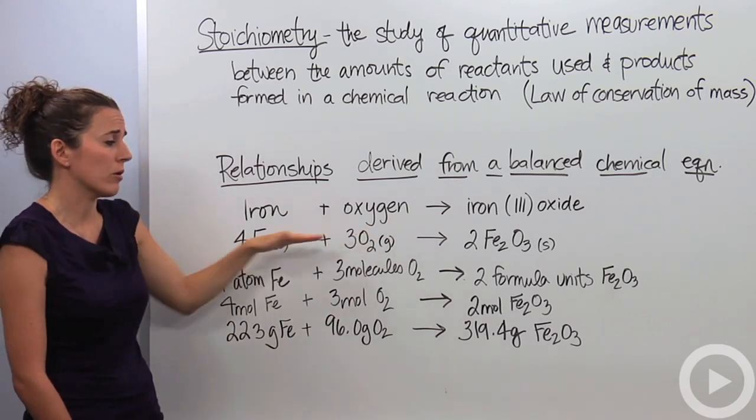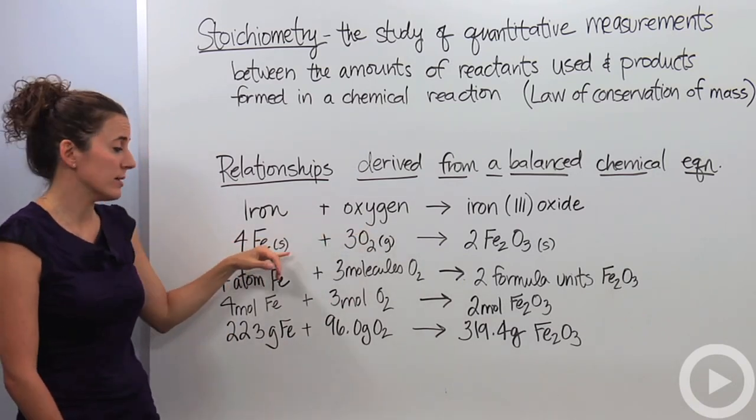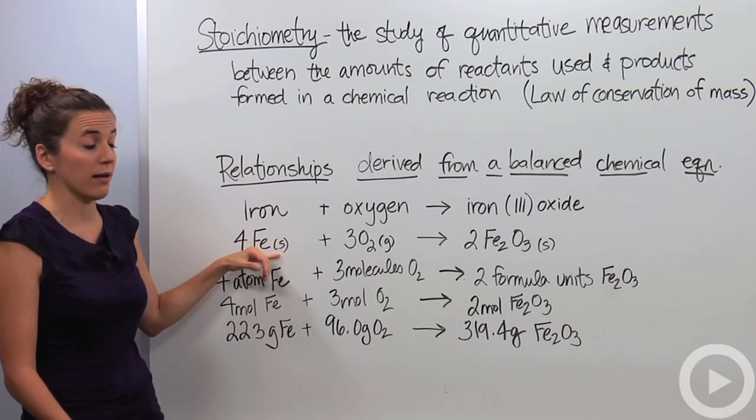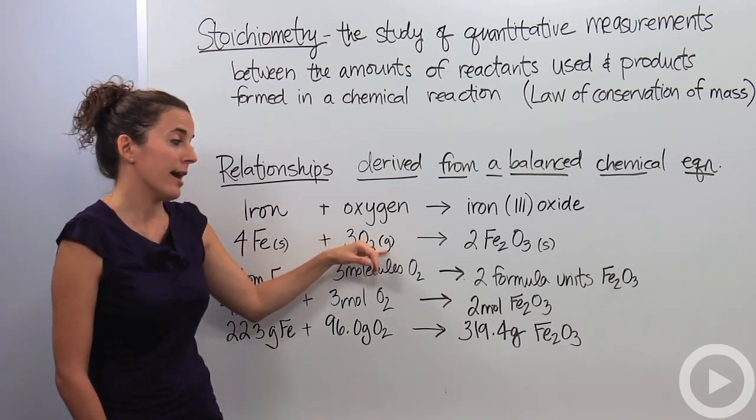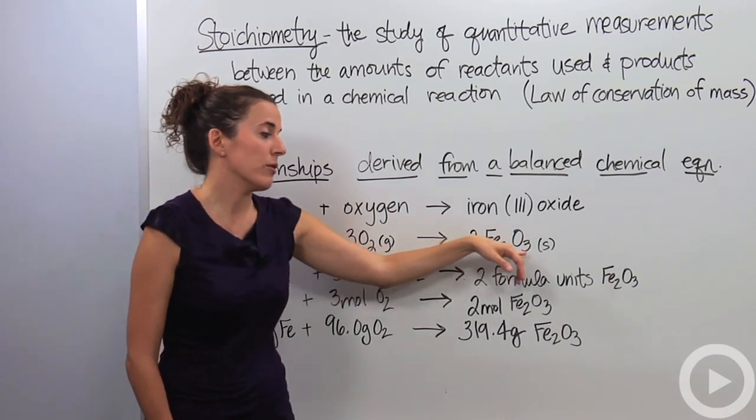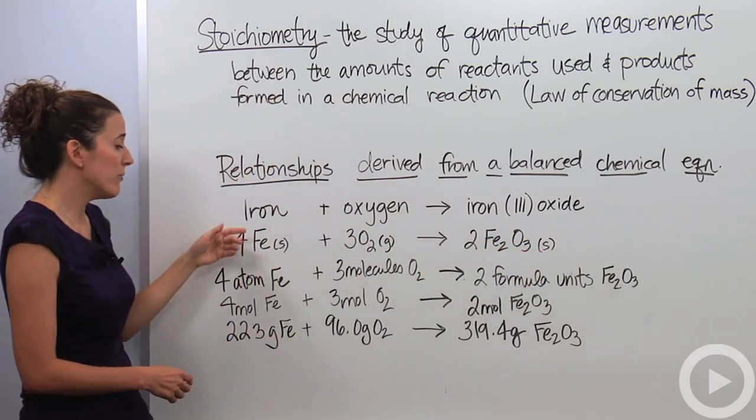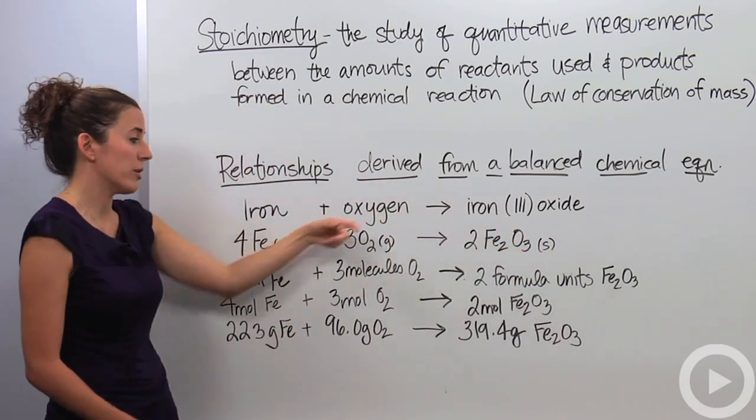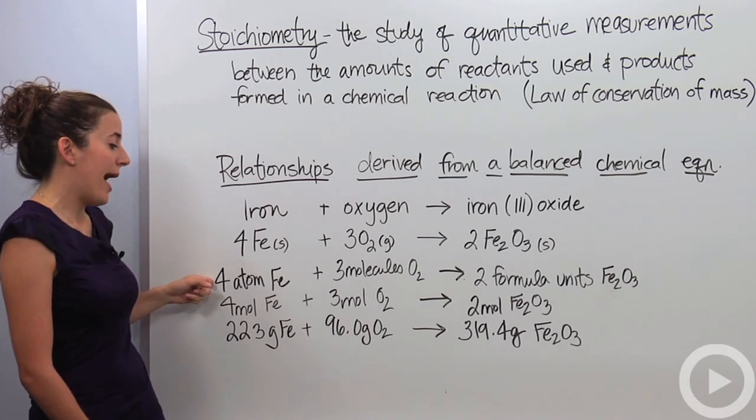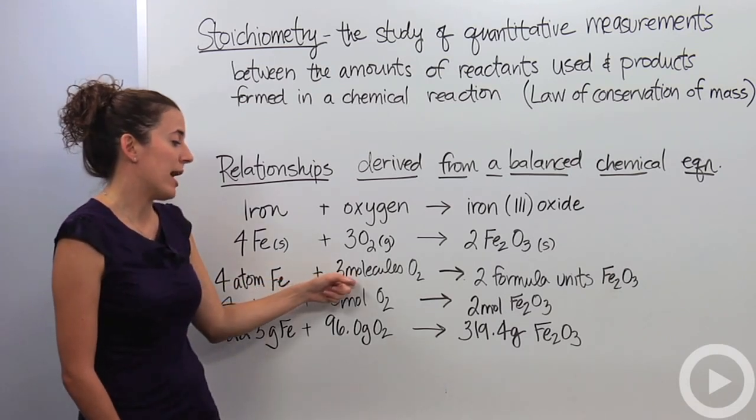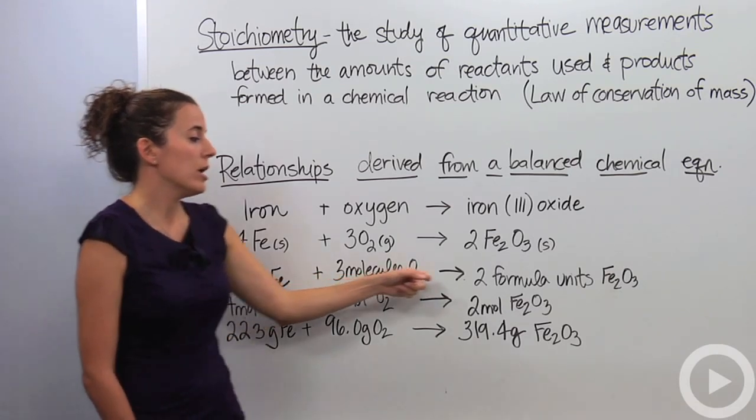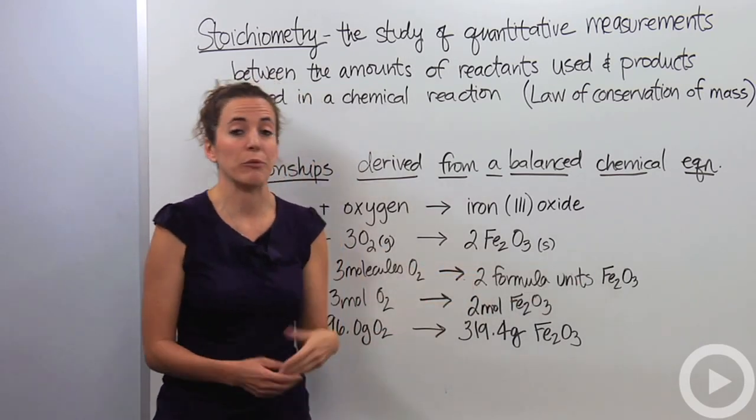We get the balanced chemical equation, meaning we get the chemical symbols and the states of matter. So we say 4Fe solid plus 3O2 gas yields 2Fe2O3 solid. And what those coefficients actually mean, that 4, 3, and 2, is that for every 4 atoms of iron that react with 3 molecules of O2, you get 2 formula units of Fe2O3.